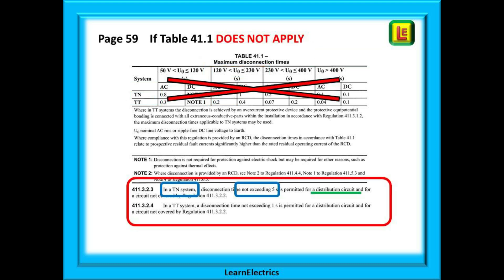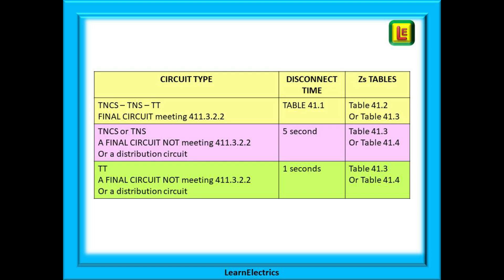If table 41.1 does not apply, what do we do? Just below the table are two important regulations that do pop up as exam questions. Regulation 411.3.2.3 tells us that if table 41.1 is not applicable, or if it is a distribution system, then for a TN system we allow a disconnection time of five seconds. Regulation 411.3.2.4 tells us that if table 41.1 is not applicable, or it is a distribution system for a TT system, then we allow a disconnection time of one second.